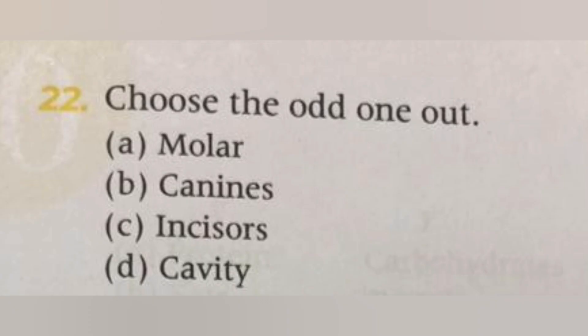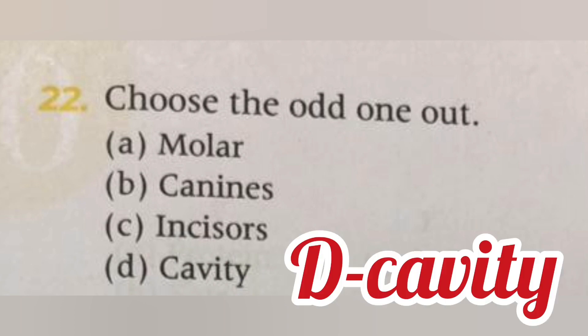Next, choose the odd one out: molar, canine, incisor, cavity. The answer is D, cavity. Molar, canine, and incisor are all types of teeth.